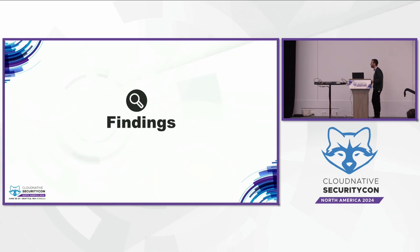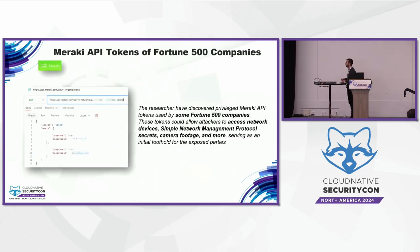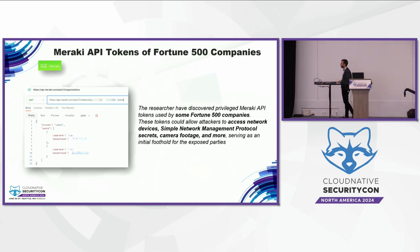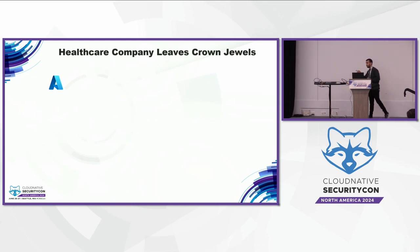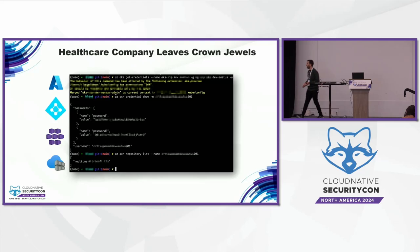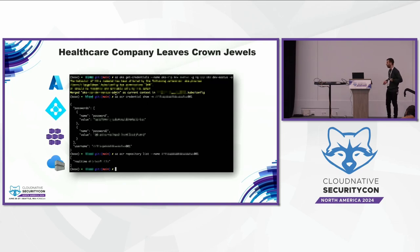Let's go over some findings. Besides the Mozilla findings, we found Meraki API tokens that gave access to network devices, SNMP secrets, and camera footage of some Fortune 500 companies. We reported this to Mozilla and the affected companies; they investigated and rotated immediately. Another example was an exposed Azure service account token for a major healthcare company, found with the mirror strategy. This token provided full access to their AKS, ACR, and more — we were essentially admins in their environment. They investigated and rotated the token.